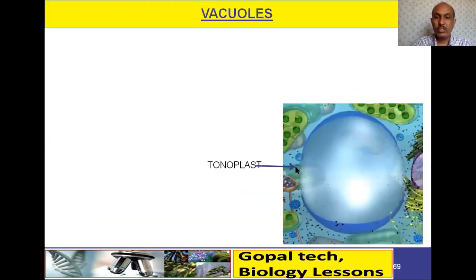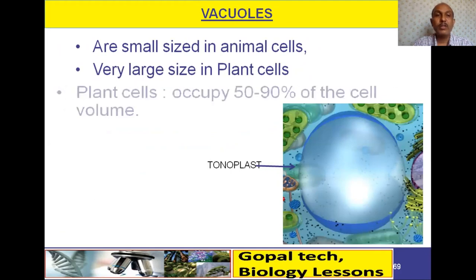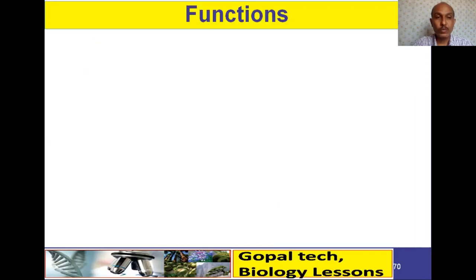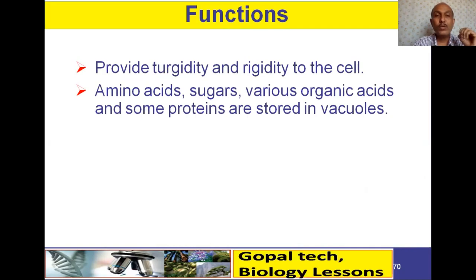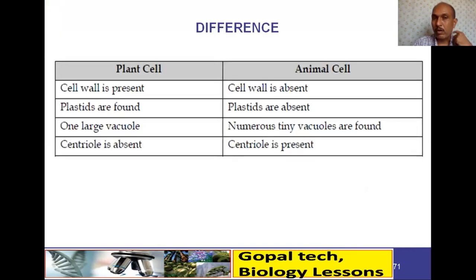Vacuoles are larger in plant cells and smaller in animal cells. They have a membrane called the tonoplast. In animal cells, vacuoles are small and numerous. In plant cells, they are very large and few in number, generally occupying 50 to 90 percent of the cell volume. They provide turgidity and rigidity to the cell and store amino acids, sugars, organic acids, and some proteins. In amoeba, they store food and are called food vacuoles.